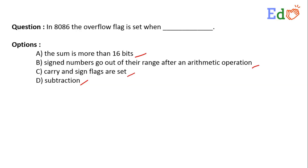Basically, in the 8086 processor, the overflow flag is a single bit in the system status register used to indicate when an arithmetic overflow has occurred in an operation, indicating that the signed two's complement result wouldn't fit in the number of bits used for the operation.